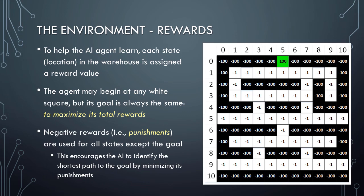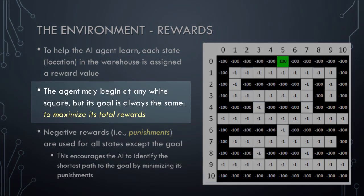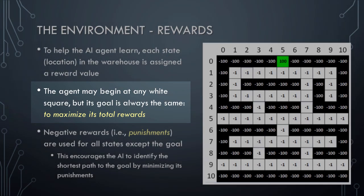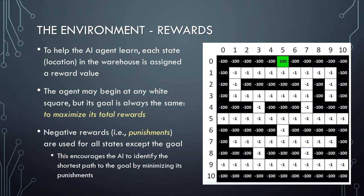Finally, let's discuss the reward structure for our scenario. To help the AI agent learn, each state, or location, in the warehouse is assigned a reward value. The agent may begin at any white square, but regardless of where the agent begins, its goal is always the same – to maximize its total rewards. Note that in this scenario, negative rewards, that is, punishments, are being used for all states except the goal. This encourages the AI to identify the shortest path to the goal by minimizing its punishments.